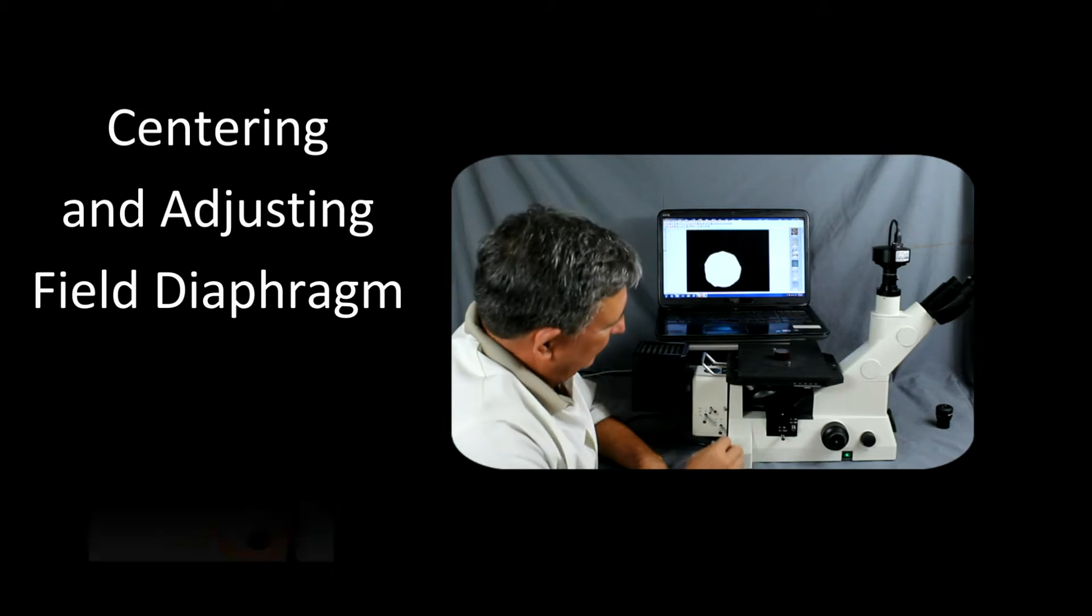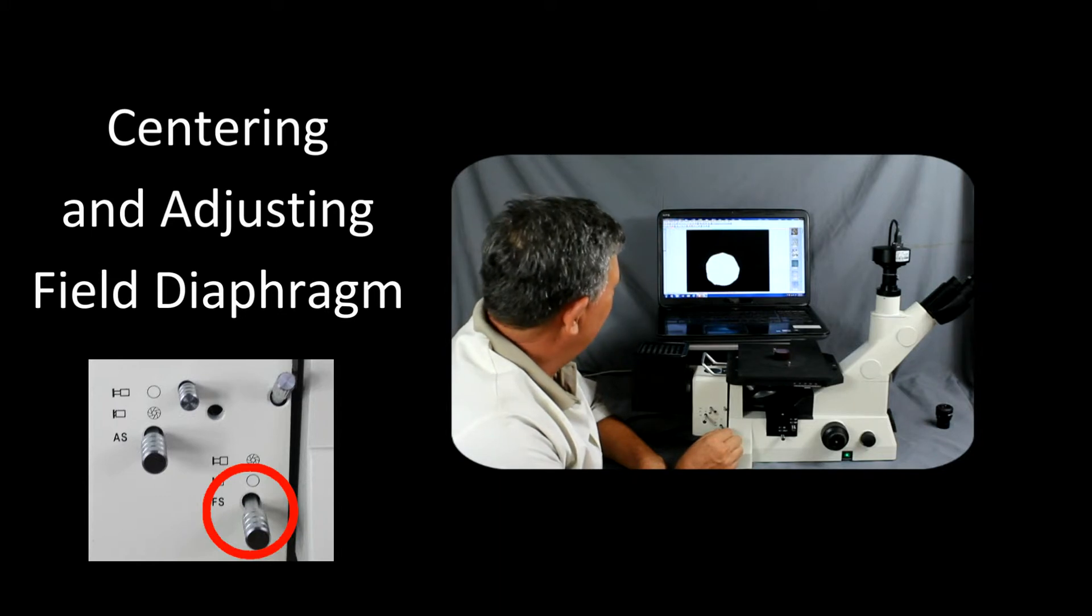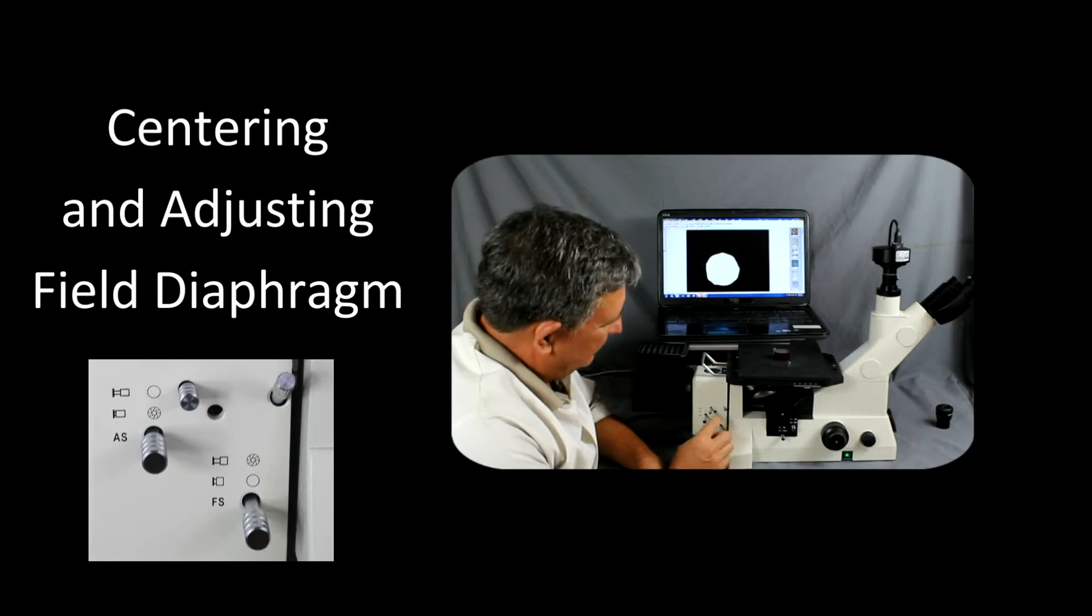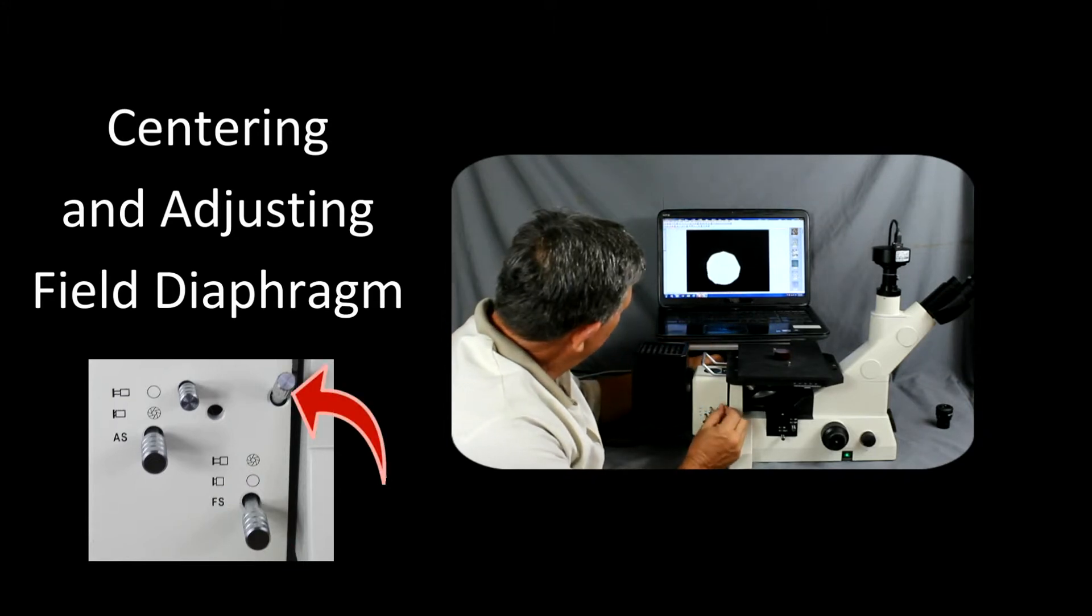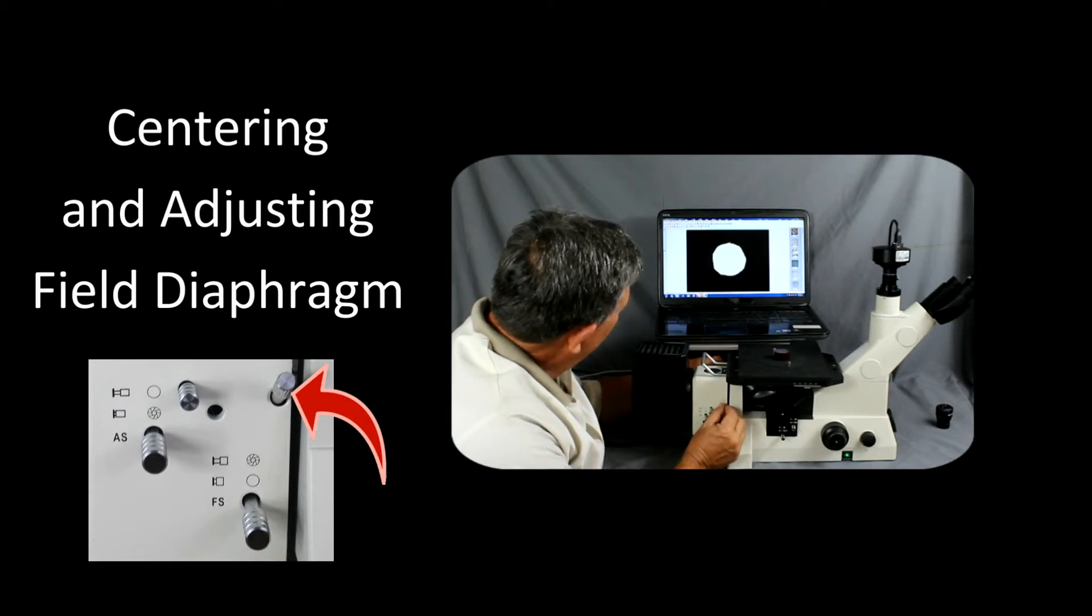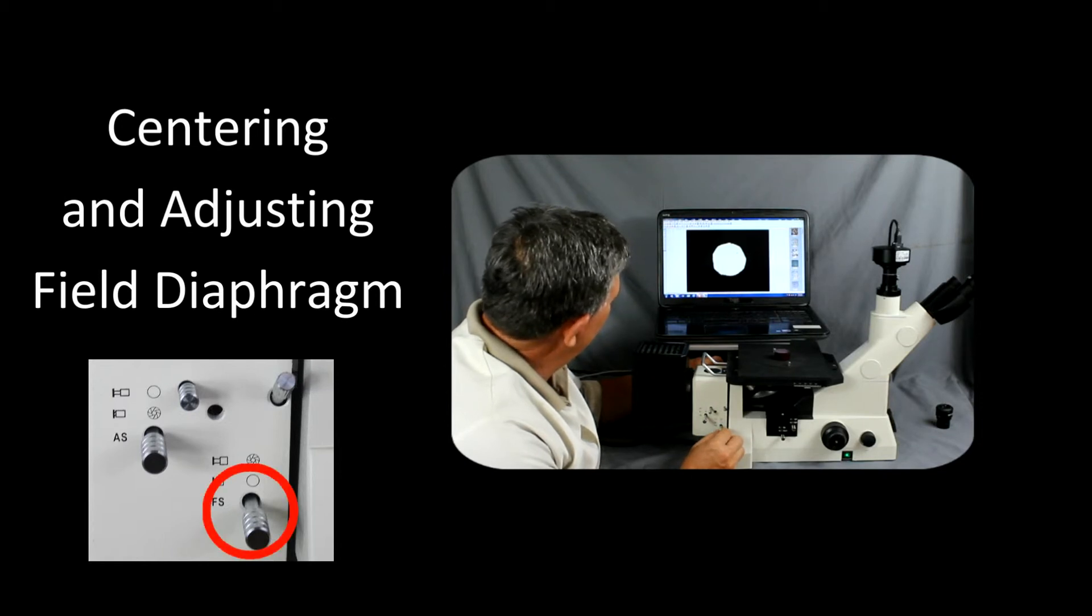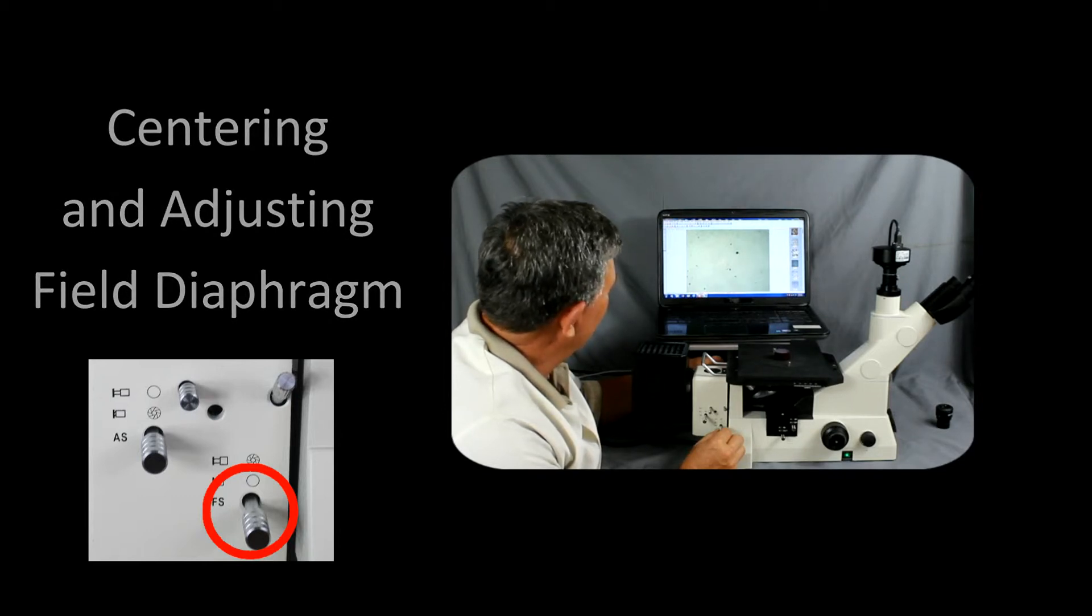Adjusting the field diaphragm. By pulling out this lever here, we can reduce the iris on the field diaphragm. Once we have that reduced, we can now center it. So there's a knob here and a knob here. So let's go ahead and turn these until we have it centered. And after we have it centered, what we want to do is we want to push the lever back in so that we're just outside the field of view. This will reduce any stray light within the system.